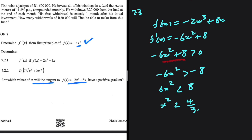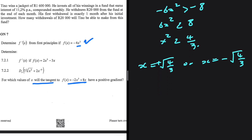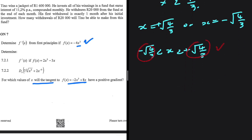Dividing both sides by 6 gives x squared less than 4 over 3. Finding critical values: x equals plus or minus the square root of 4 over 3. Substituting any value between minus root of 4 over 3 and plus root of 4 over 3 confirms the gradient is positive. So the answer to 7.3 is that x is between minus square root of 4 over 3 and plus square root of 4 over 3, where the gradient is positive.